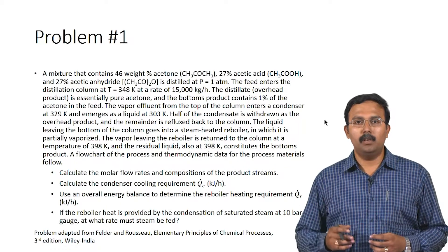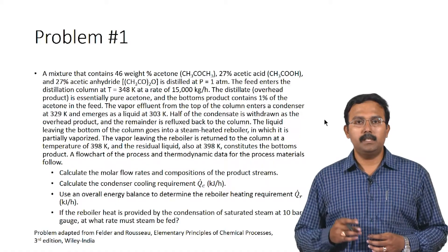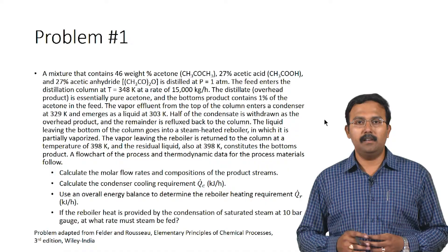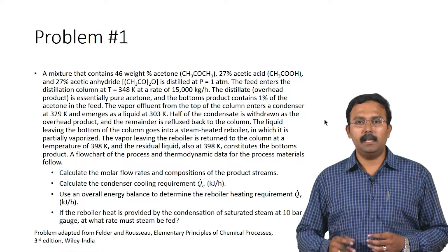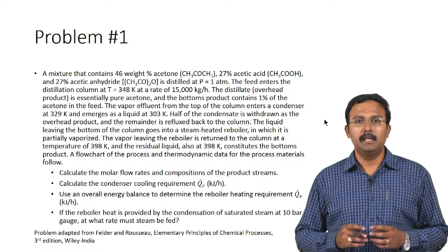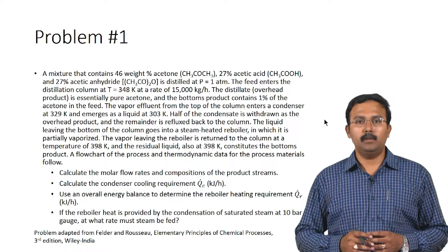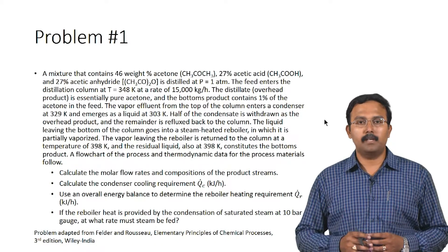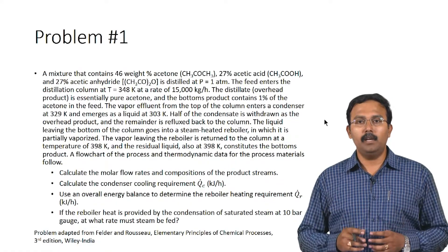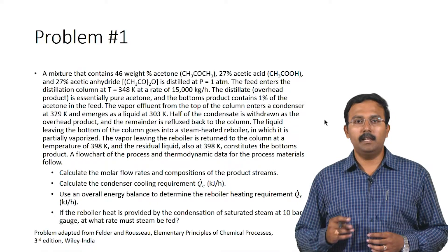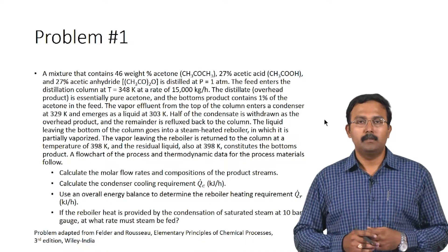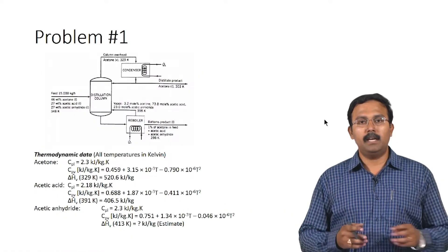Half of the condensate is withdrawn as the overhead product and the remainder is refluxed back to the column. The liquid leaving the bottom of the column goes to a steam-heated reboiler where it is partially vaporized. The vapor leaving the reboiler is returned to the column at 398 Kelvin, and the residual liquid also at 398 Kelvin constitutes the bottoms product. We are asked to calculate molar flow rates, product stream compositions, condenser cooling requirement, reboiler heating requirement QR, and the steam feed rate.